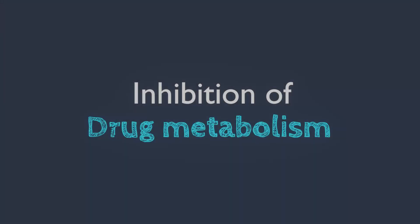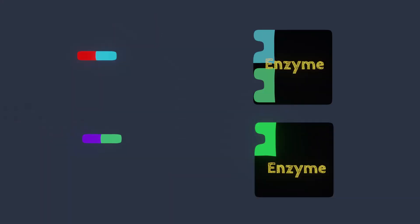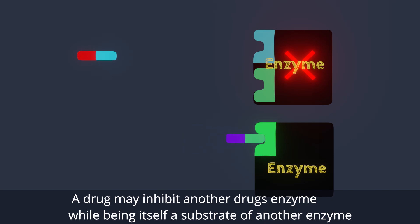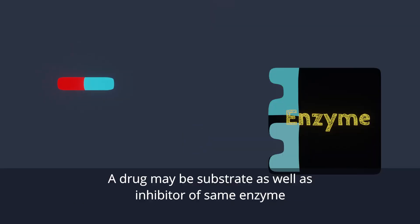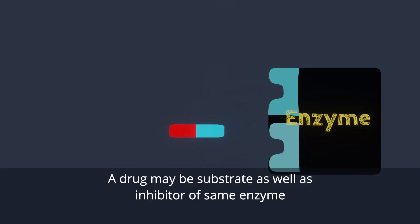Inhibition of drug metabolism: A drug may competitively inhibit another drug. A drug may inhibit another drug's enzyme while being itself a substrate of another enzyme. A drug may also be the substrate as well as the inhibitor of the same enzyme.